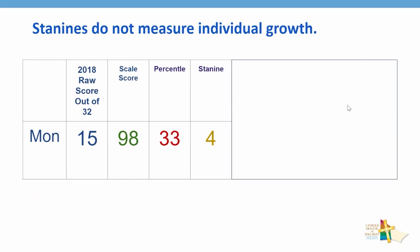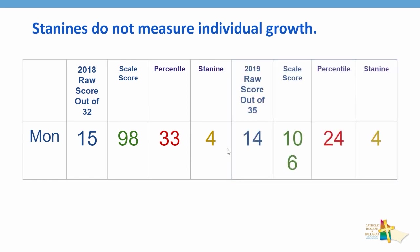Let's have a look at one of our sample students — I've chosen Mon. Her percentile ranking of 33 placed her in stanine 4. But Mon dropped back to percentile 24 in the second year of testing. However, a percentile of 24 still leaves Mon in stanine 4. Mon has dropped back considerably against her cohort, but her stanine has stayed the same. This is a really good example of why using stanines to track individual progress is inappropriate.